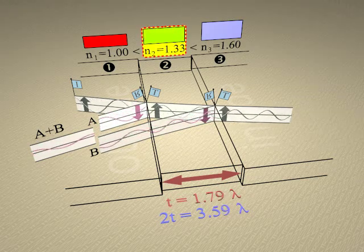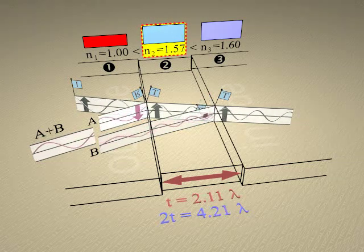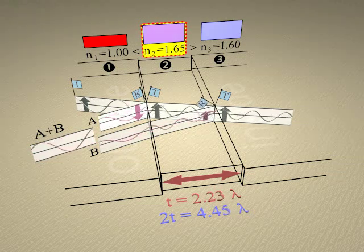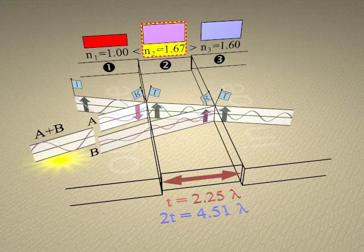Changing the relative index of the thin film medium will change the number of wavelengths traveled within the medium, and therefore the resulting phase of the second reflected beam. This changes the resulting superimposed waveform.